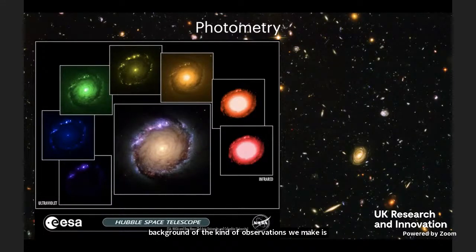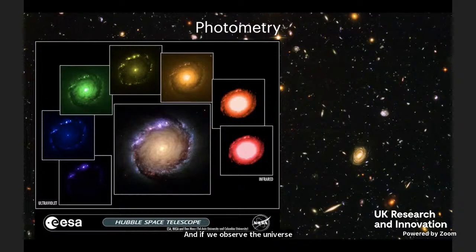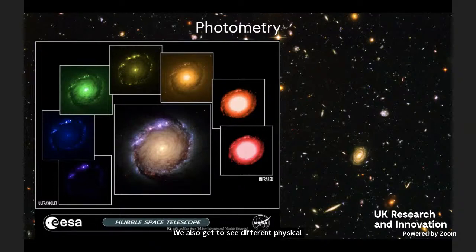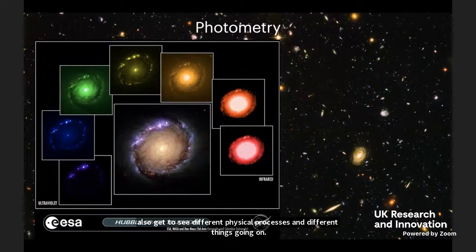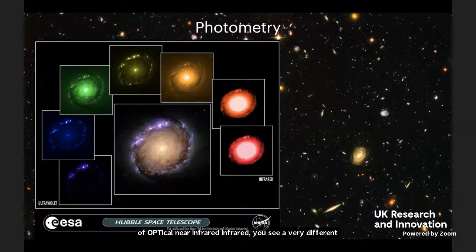One of the things we look at is photometry, where we take images of the sky and use that to map large parts of the Milky Way and the wide universe. If we observe the universe in different wavelengths — different parts of the electromagnetic spectrum — we get to see different physical processes and different things going on. As you move from ultraviolet through to optical, near infrared, and infrared, you see a very different picture of the same galaxy because you're seeing different processes at work.